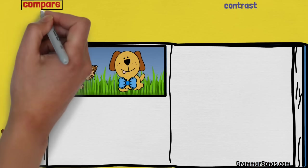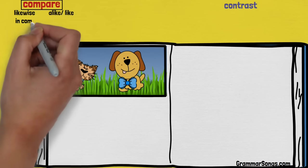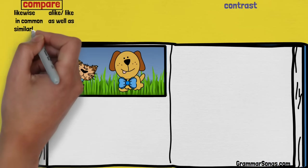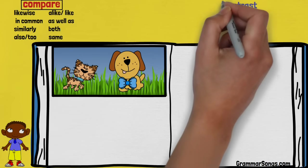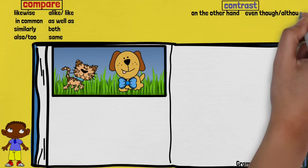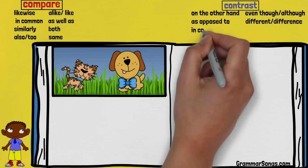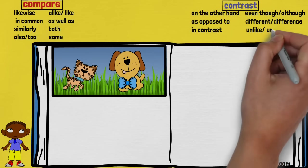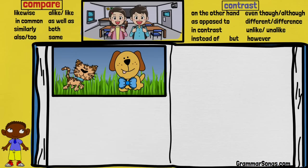Remember, some signal words for compare are: likewise, alike or like, in common, as well as, similarly, both, also or too, and same. Some common signal words to contrast are: on the other hand, even though or although, as opposed to, different or difference, in contrast, unlike or unalike, instead of, but, and however. Let's read the text to learn more about Stripes and Freckles. Here we go!